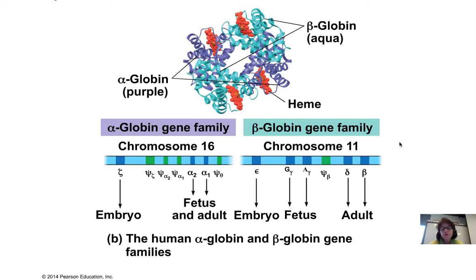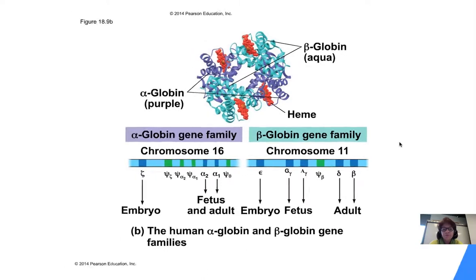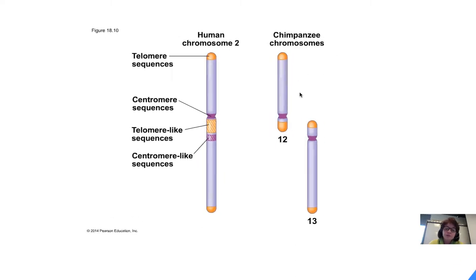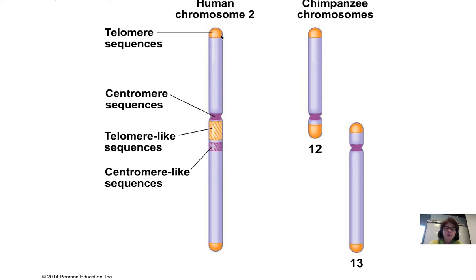Once we sequenced entire genomes — for example, human and chimpanzee — we can compare them and see where human chromosomes came from. Chimpanzees have one more chromosome than we do, and our chromosome 2 — the second longest chromosome we have — is actually a fusion of chimpanzee chromosomes 12 and 13. We know that by looking at the unique sequences that exist in those chromosomes.